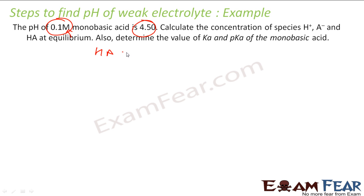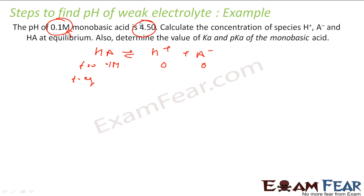The reaction is: HA (acid) → H⁺ + A⁻. At t = 0, the concentration of HA is 0.1 M, and products are zero. At equilibrium, HA becomes 0.1 − x, H⁺ becomes x, and A⁻ becomes x. So we need to find the value of x first.